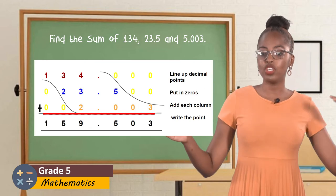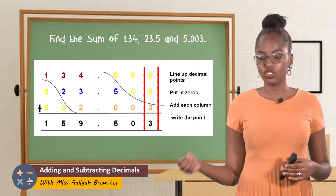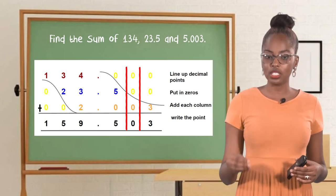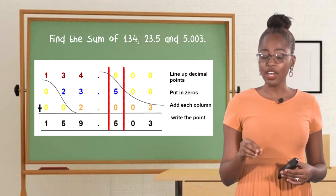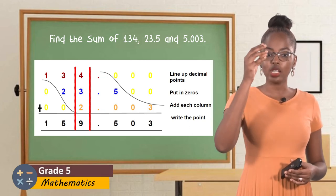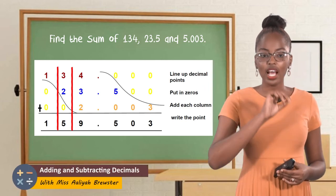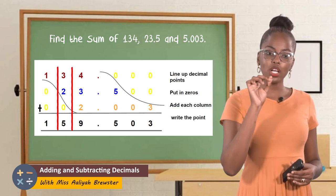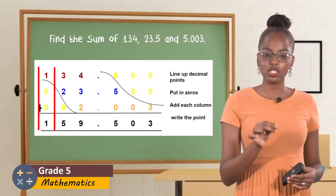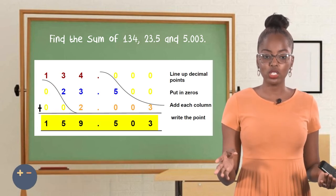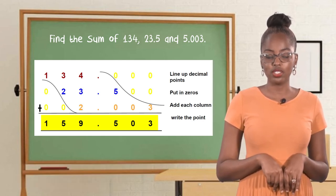Starting from the right and moving to the left, we begin to add. The first column: 0 plus 0 plus 3 gives us 3. The second column: 0 plus 0 plus 0 gives us 0. The third column: 0 plus 5 plus 0 gives us 5. Then of course we write the point back — that is very important. Then the fourth column: 4 plus 3 plus 2 gives us 9. Wait — sorry. The fifth column: 3 plus 2 plus 0 gives us 5. And the last column: 1 plus 0 plus 0 gives us 1. Now that we have our answer, the solution is 159 and 503 thousandths.